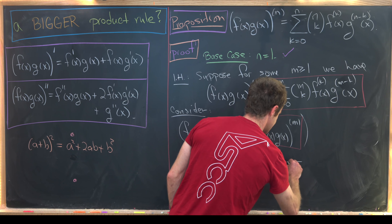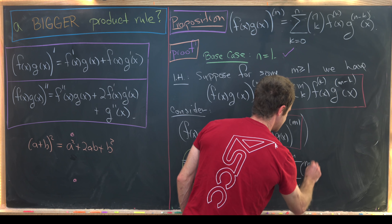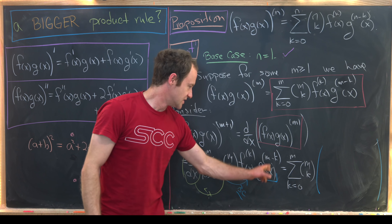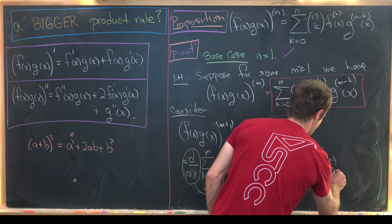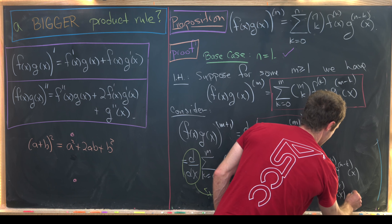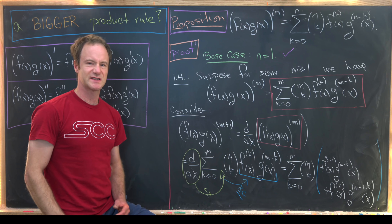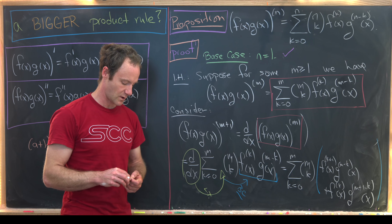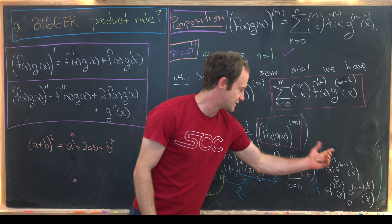Using linearity to bring the derivative inside the sum and applying the product rule, we get: the sum as k goes from 0 to m of (m choose k), times the quantity [(k+1)th derivative of f times the (m−k)th derivative of g] plus [kth derivative of f times the (m+1−k)th derivative of g]. That's just the standard product rule, bringing k to k+1 and m−k to m−k+1.